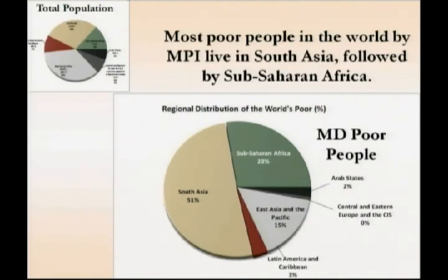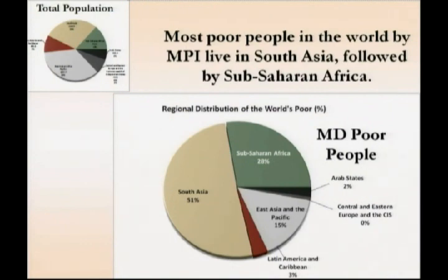Of those 1.6 billion people who are multidimensionally poor, 51% of them live in South Asia and 28% in Sub-Saharan Africa. The increment from the population figures for those countries of the poor people is quite high, whereas East Asia and other regions have relatively less.